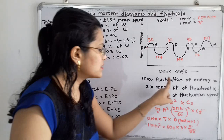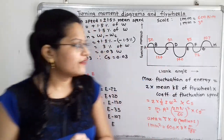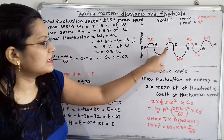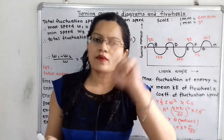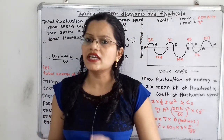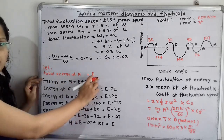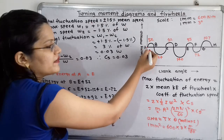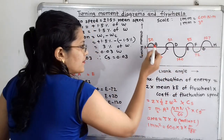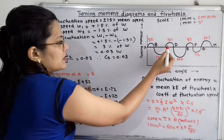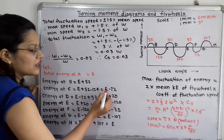Maximum fluctuation of energy is the difference between maximum energy and minimum energy. The diagram has points A, B, C, D, E, F, G, H. We calculate total energy at each point. Let energy at A = E. Energy at B = E + 52. Energy at C = E + 52 − 124 = E − 72. Energy at D = E − 72 + 92 = E + 20.